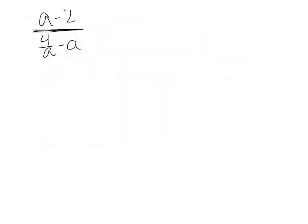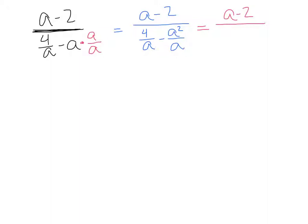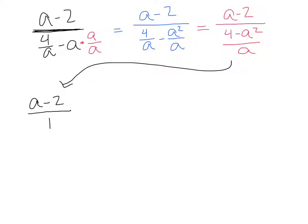This one's a little different. a minus 2 is the numerator — I don't have to do anything to it since it's not a fraction at all. The denominator does need to be simplified: I have 4 over a and a. I need to write that second term over a, so I'm going to multiply it by a over a. I end up with a minus 2 over (4 over a minus a squared over a), which simplifies to a minus 2 over (4 minus a squared over a). Now let's carry out this division problem — dividing means multiplying by the reciprocal — so I get a minus 2 over 1, times a over (4 minus a squared).